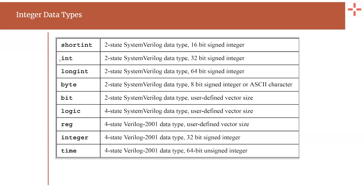The keyword reg in SystemVerilog was added only to provide backward compatibility with Verilog. By default, all variables in SystemVerilog are equivalent to the register category in Verilog, and all net types in SystemVerilog are equivalent to the wire category in Verilog. The data types time and realtime can be used to hold simulation time in testbench code and are not widely used in RTL code.